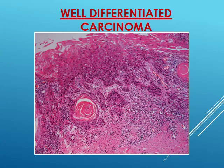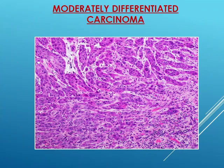Well-differentiated carcinoma is identified by the presence of keratin pearls under the microscope, meaning the cells retain their function and can produce keratin. Whenever we see keratinization in the form of keratin pearls or individual cell keratinization, this indicates well-differentiated carcinoma — meaning the cells are close to the mother cells from which they arose.